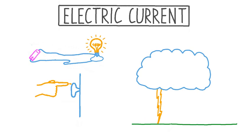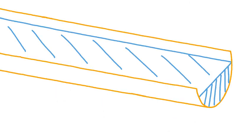Before we talk about electric current, let's think about a current that we may be more familiar with. Say that we have a channel that carries water, and this water flows left to right as we've drawn it. Water flowing like this, all moving along in the same direction, is called a current.